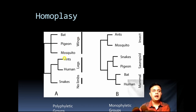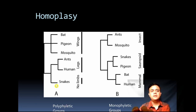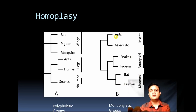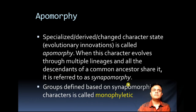That leads to polyphyletic groups. For example, bat, pigeon, and mosquito grouped together because they are all winged animals, while ants and humans are grouped by legs or appendages, and snakes have no limbs. This is a fallacious scheme because it uses polyphyletic character states — non-monophyletic character states that should not be used. In contrast, if you use synapomorphic character states for grouping organisms, you get monophyletic groups, which are natural groups sharing one common ancestor derived through speciation.